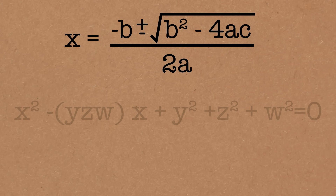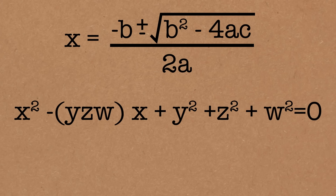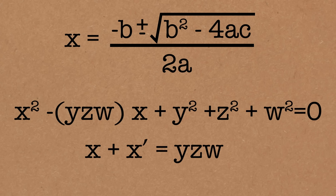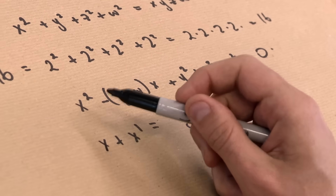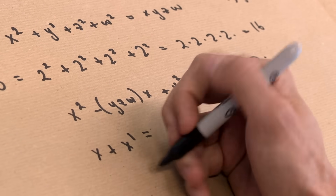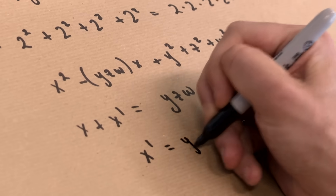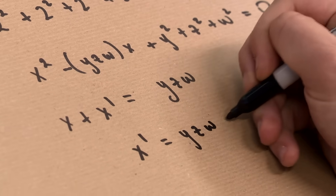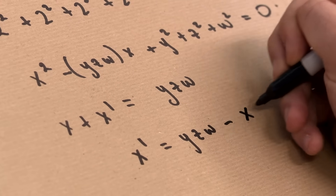We have a quadratic equation here. So if there are two roots, one of the roots is the one we already have. And the other one will be related to x by y, z, w — that's minus b. There's a minus sign here that cancels out with the other minus sign, and a equals 1 here. In other words, if I know one solution x, I know the other one: x prime equals the product of the other variables minus x.